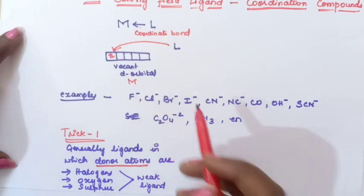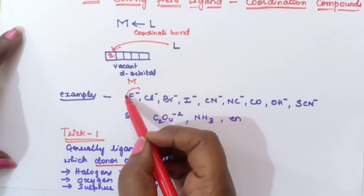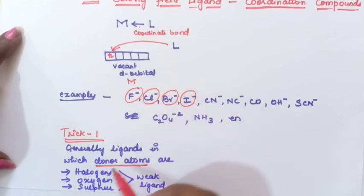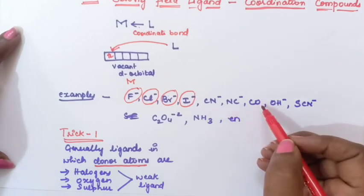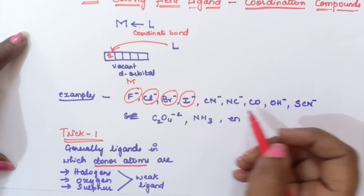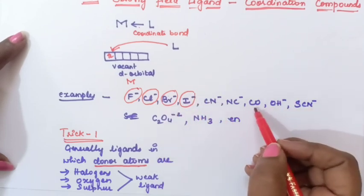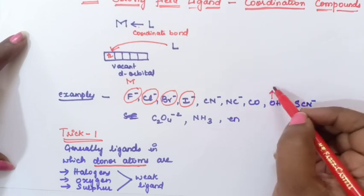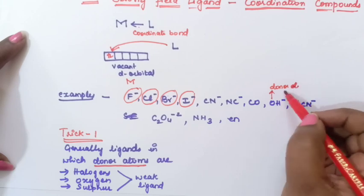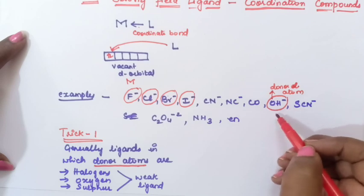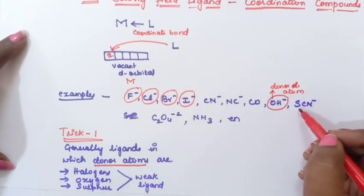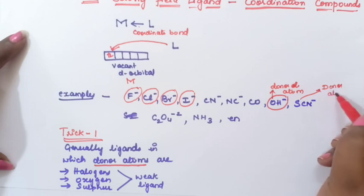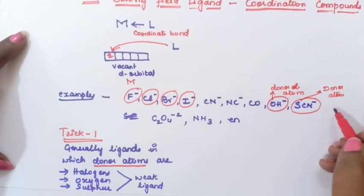Halogens are F⁻, Cl⁻, Br⁻, and I⁻ — all of these are weak field ligands. If oxygen is a donor atom, it is also a weak field ligand. In CN⁻, carbon is the donor atom, so that is not a weak field ligand. In OH⁻, oxygen is the donor atom, so OH⁻ is a weak field ligand. In SCN⁻, sulfur is the donor atom, so SCN⁻ is also a weak field ligand.